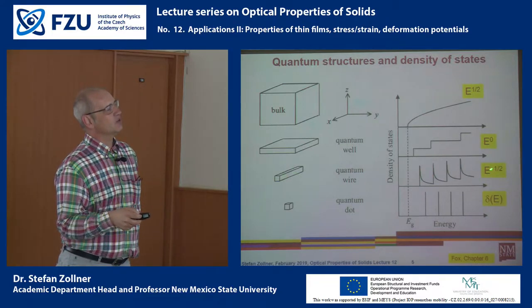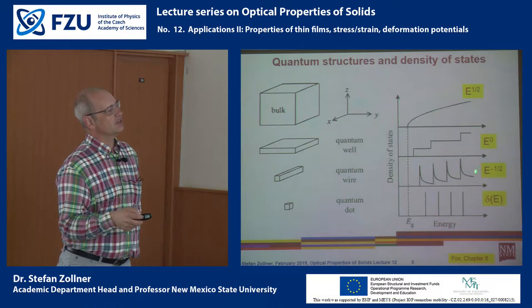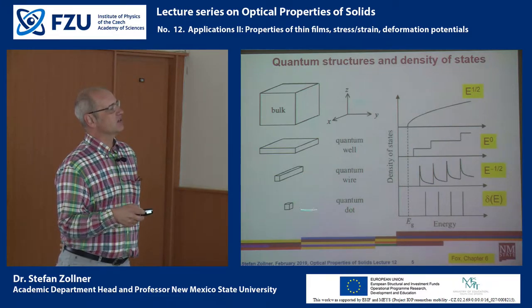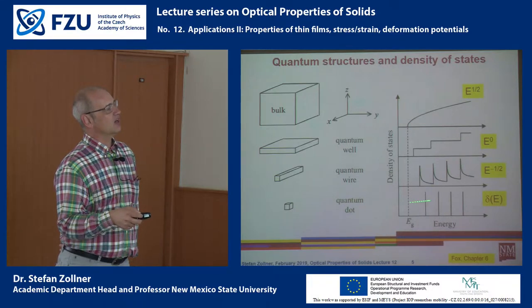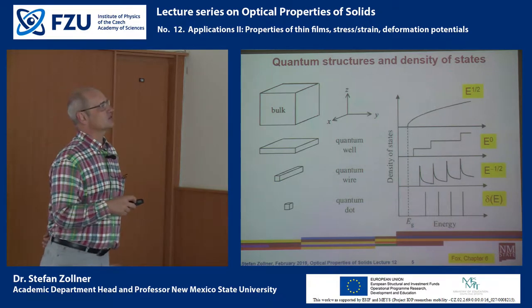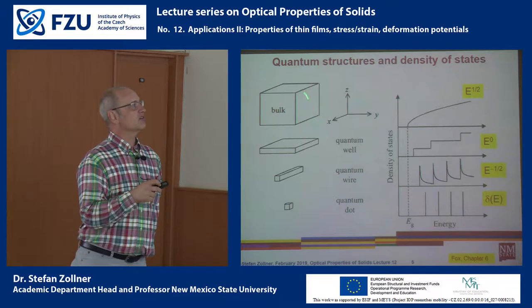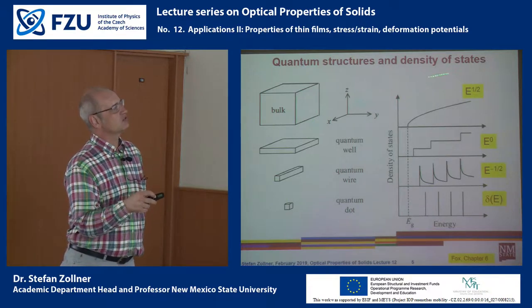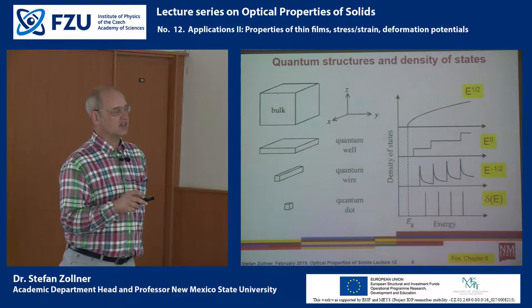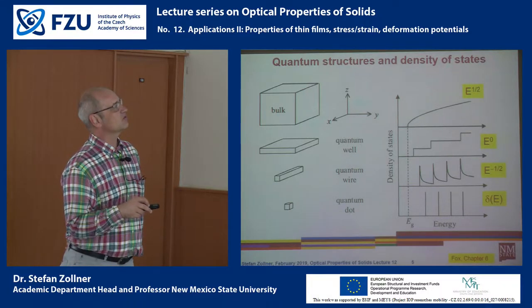Reducing dimensions further gives a quantum wire where the density of states goes like one over the square root. Reducing to a zero-dimensional structure — a quantum dot — gives discrete energies described as a series of delta functions. This is how the dimensionality of a nanostructure is related to the density of states, influencing many properties of quantum structures.